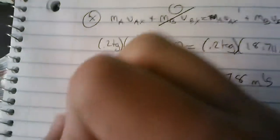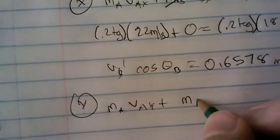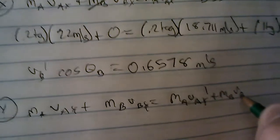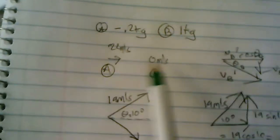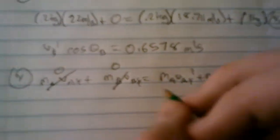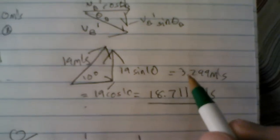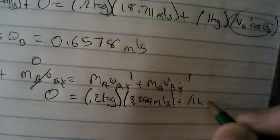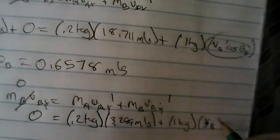Okay, on to the Y direction, since we can't do anything else with the X direction. So, back to our equation, M_A V_AY plus M_B V_BY equals M_A V_AY prime plus M_B V_BY prime. I've got to start saying prime instead of tick. So these are both 0, because neither of them are moving in the Y direction. So 0 equals M_A, which is 0.2 kilograms, times V_AY, well that's going upwards, which is 3.299 meters per second, plus 1 kilogram times V_BY, which is VB sine theta B.